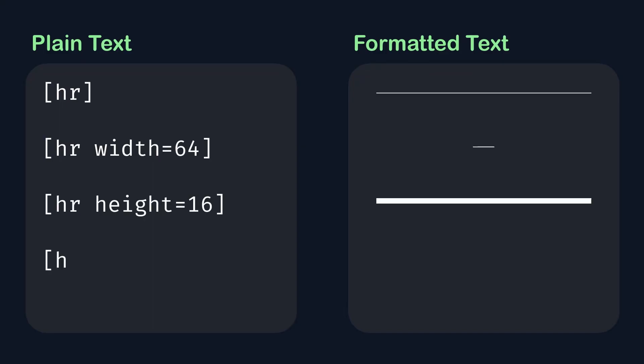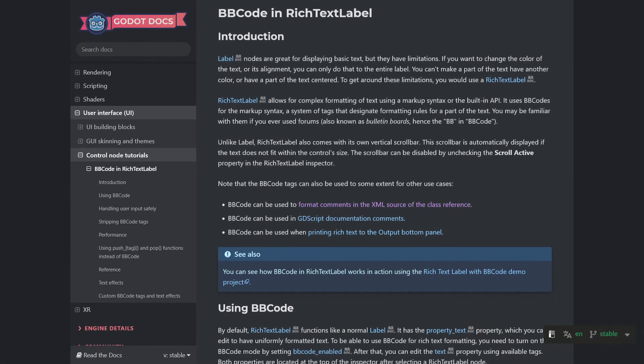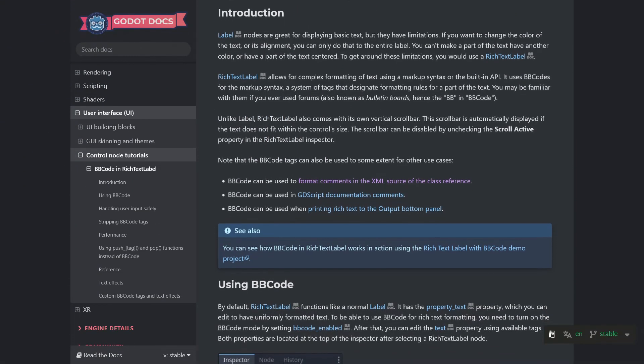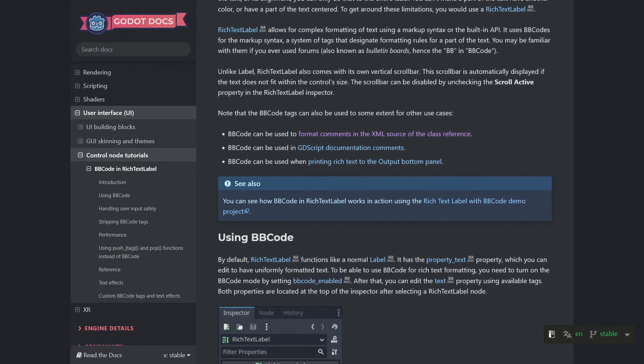For example, the horizontal separator can have its width, height, or color changed. Most of the available options for these effects are documented in the Godot page on bbcode formatting, so I'm not going to really cover them in this video.